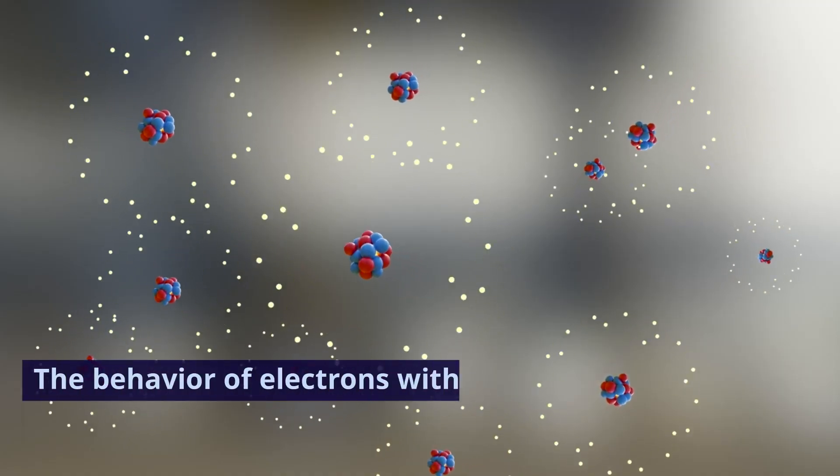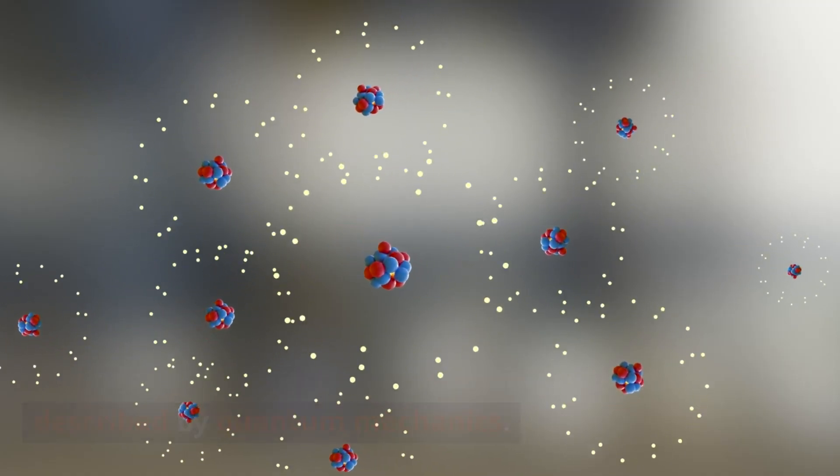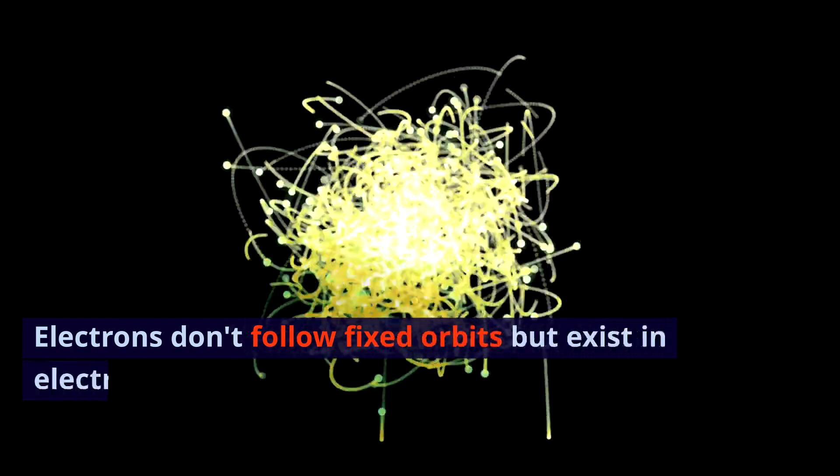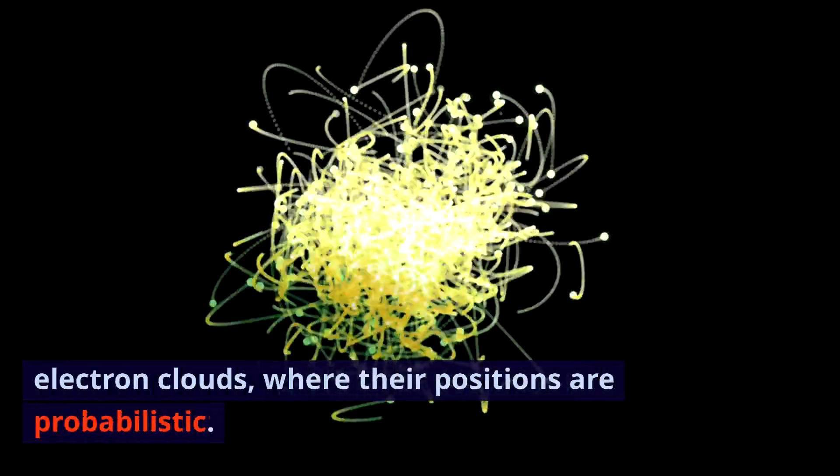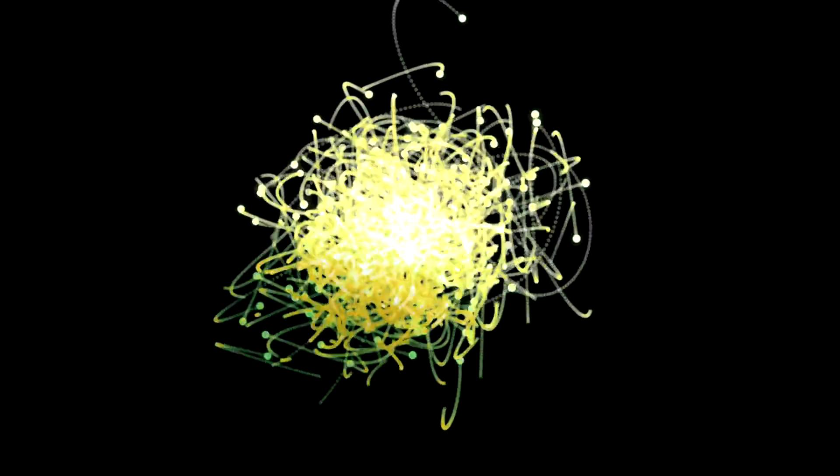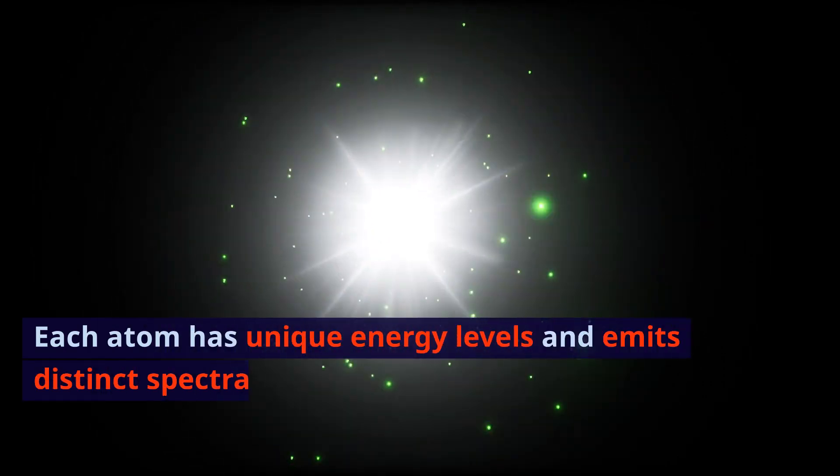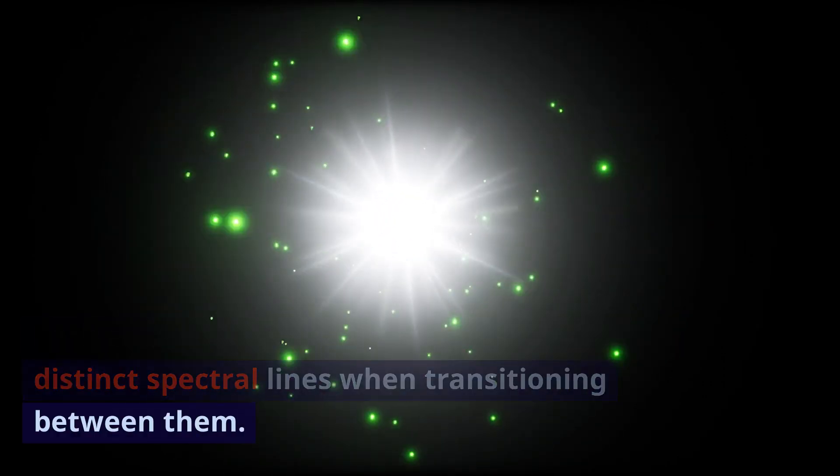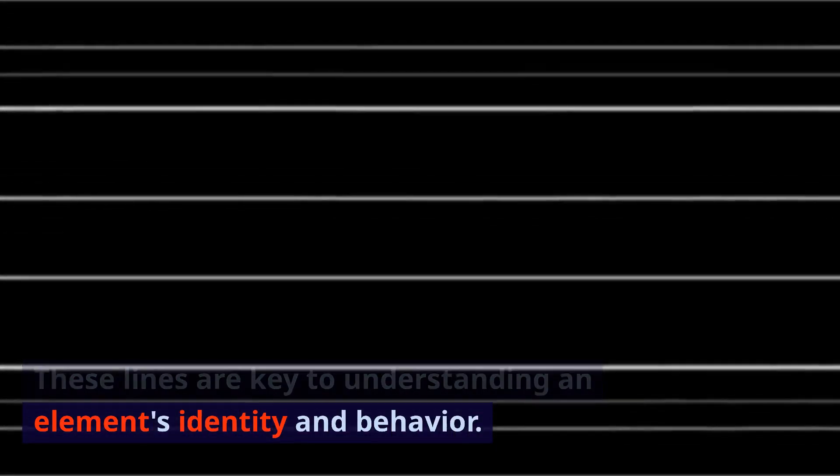The behavior of electrons within the atom is described by quantum mechanics. Electrons don't follow fixed orbits, but exist in electron clouds, where their positions are probabilistic. Each atom has unique energy levels and emits distinct spectral lines when transitioning between them. These lines are key to understanding an element's identity and behavior.